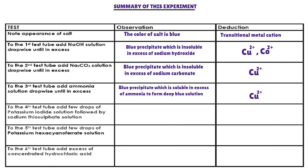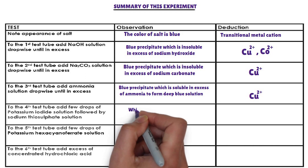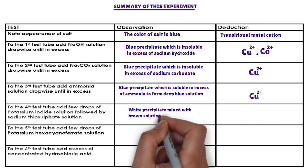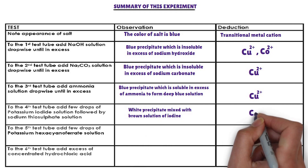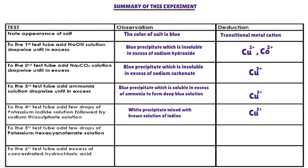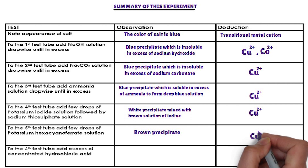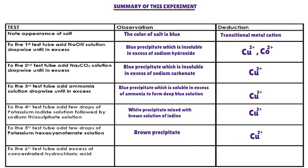Second confirmatory test: potassium iodide solution is added to the fourth test tube followed by sodium thiosulfate. The cation that forms a white precipitate mixed with a brown solution of iodine when potassium iodide is added is copper-2-ion. Copper-2-ion is confirmed. Third confirmatory test: potassium hexacyanoferrate solution is added to the fifth test tube. The cation that forms a brown precipitate with potassium hexacyanoferrate is copper-2-ion. Copper-2-ion is confirmed.